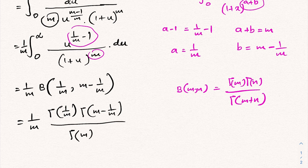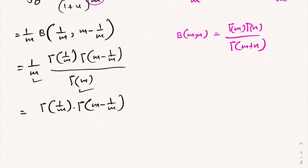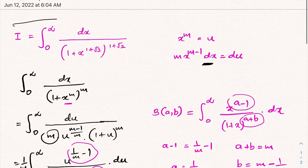We can simplify further: m · Γ(m) = Γ(1 + m), using the identity Γ(1 + n) = n · Γ(n). So the denominator m · Γ(m) becomes Γ(1 + m), and our integral simplifies to Γ(1/m) · Γ(m − 1/m) / Γ(1 + m).